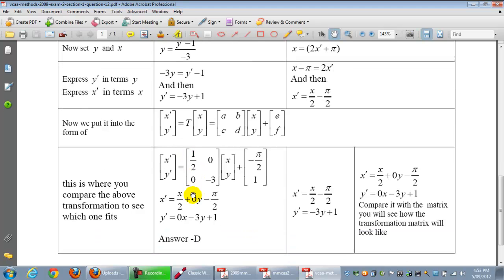Let's multiply this up using matrices. So it's 1/2 times x, then 0 times y, plus -π/2. So that will give us that.